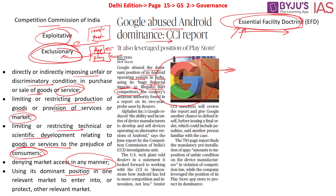What does the essential facilities doctrine mean? A monopolistic company that has already built infrastructure, established credentials, and essential facilities must allow other companies to use these resources. If it does not allow this, it is violating the essential facilities doctrine — which obligates sharing of resources with other players to facilitate healthy competition.